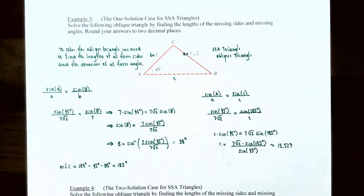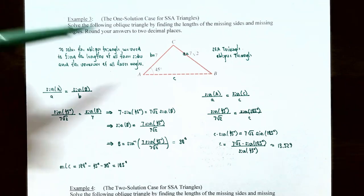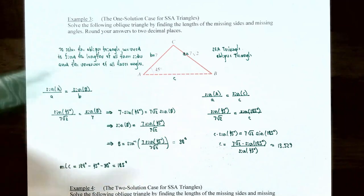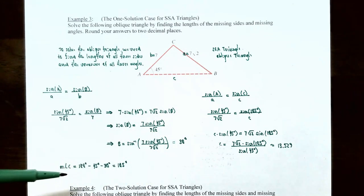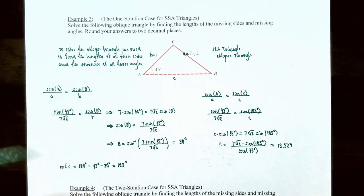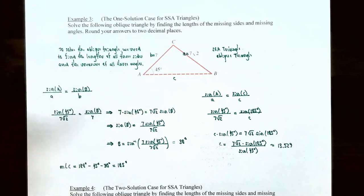Now that we have two angles, we can find the remaining angle C. Since the three angles of a triangle must sum to 180°: angle C = 180° − 45° − 30° = 105°. So angle C is a 105° angle. Now that we have angle C, we can find the length of side C using the law of sines: sin(A)/a = sin(C)/c.